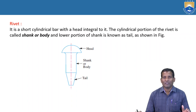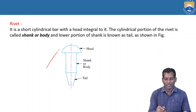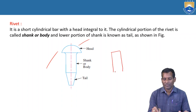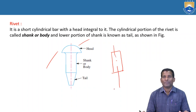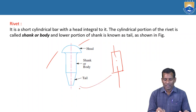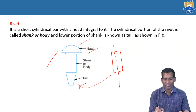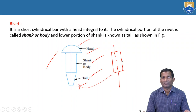In a riveted joint, the main important component is the rivet, shown in this figure. It is a short cylindrical bar with a head integral to it. The head portion is at the top. Before making the rivet, the bar is plain. After formation of the rivet, the middle portion is called the shank or body, and the bottom portion is called the tail. The upper portion is called the head and the lower portion is the shank.